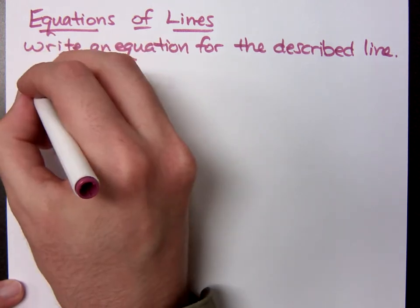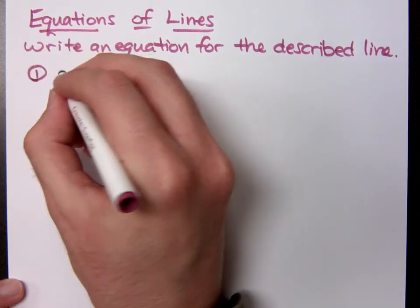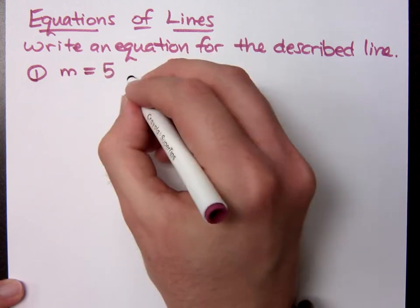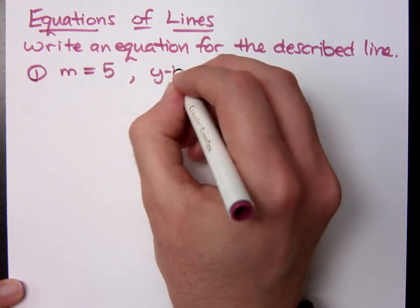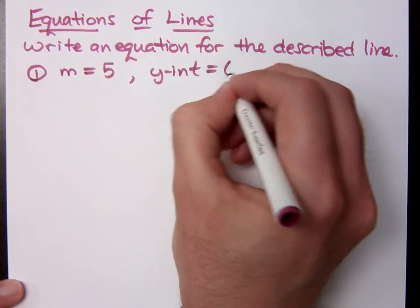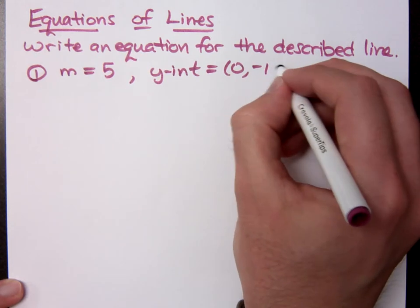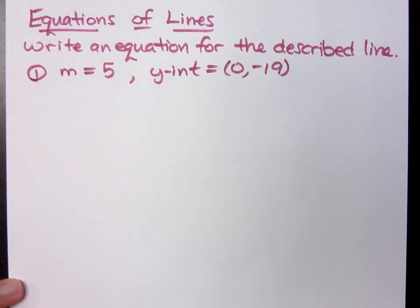Now, we've just got to run through some of these because we've seen these before, at least we're supposed to have seen them. If I say that the slope is 5, and I give you the y-intercept of 0, negative 19,